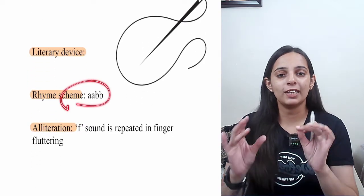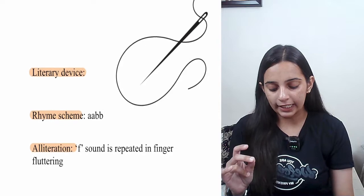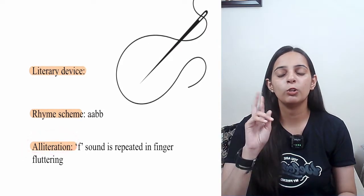Now let's look at the literary devices of the second stanza. The rhyming scheme is AABB. There is also alliteration — the sound of 'F' is repeated twice.